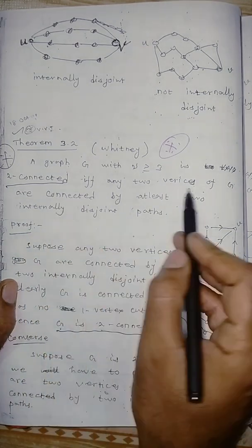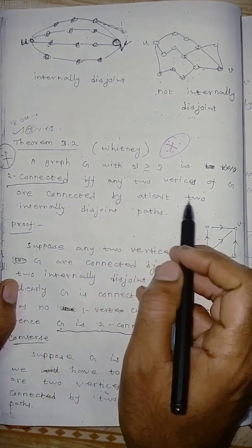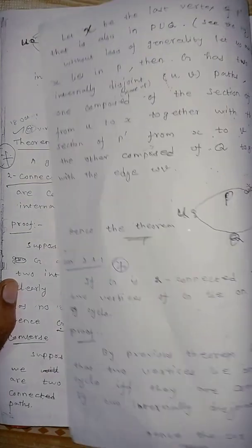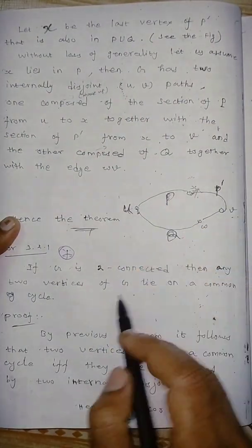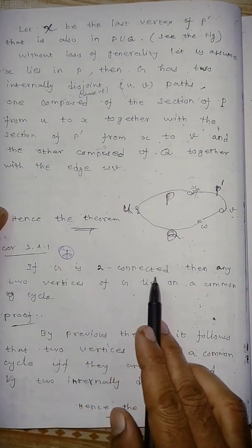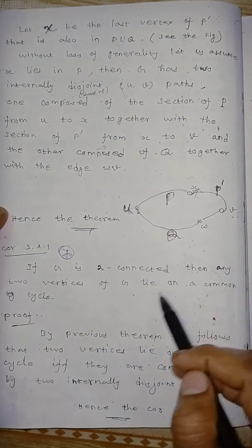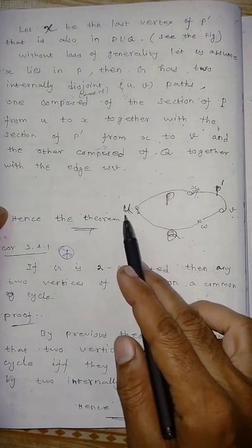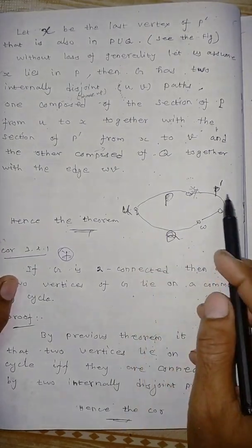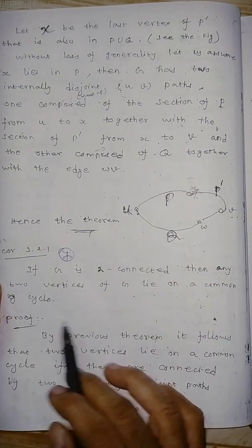Graph G is a 2-connected graph, and any two vertices of the graph are connected by at least 2 internally disjoint paths. So in the cycle, the vertices u and v are connected and lie on a common cycle.